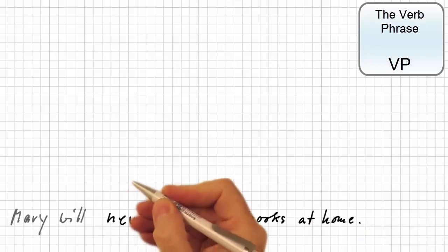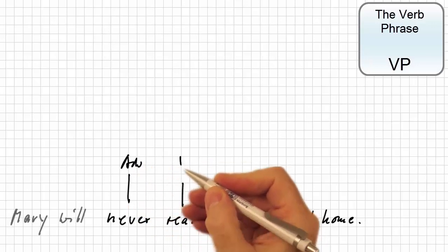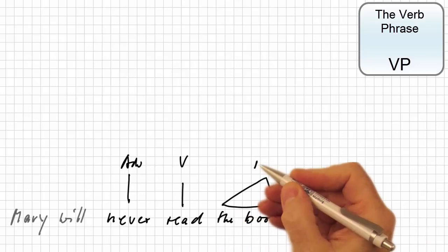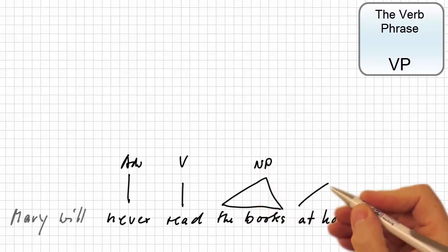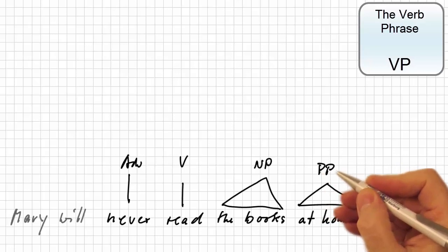The verb phrase consists of the following components: an initial adverb, the verbal head read, and two phrasal categories, which we present as triangles here, the noun phrase, the books, and the prepositional phrase, at home.